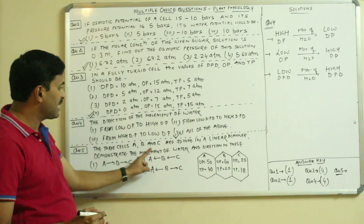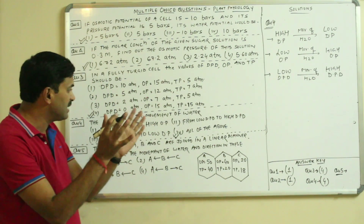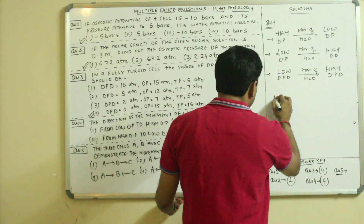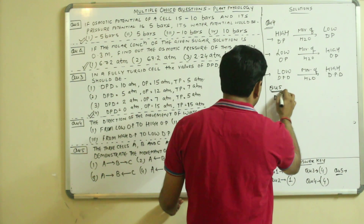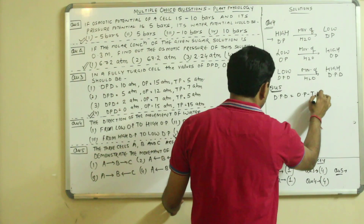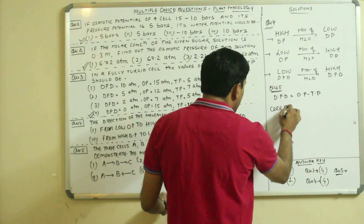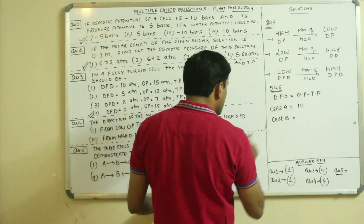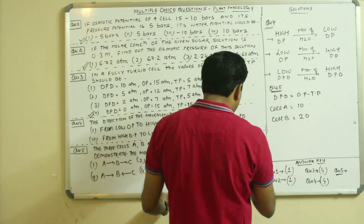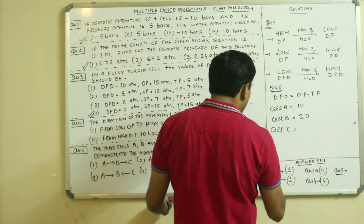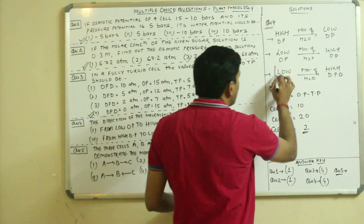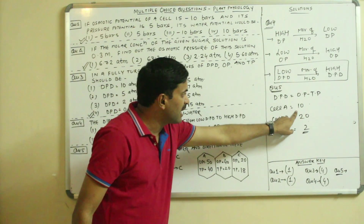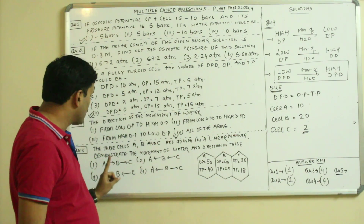Question 5: three cells A, B, and C are joined in a linear fashion. Using DPD = OP − TP: Cell A has DPD = 50 − 40 = 10; Cell B has DPD = 40 − 20 = 20; Cell C has DPD = 20 − 18 = 2. Water moves from low DPD to high DPD.